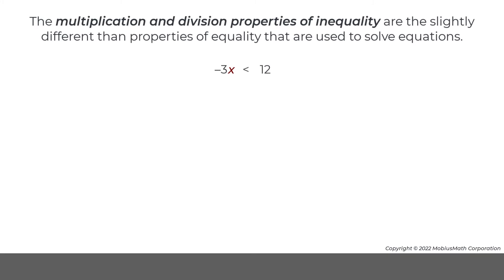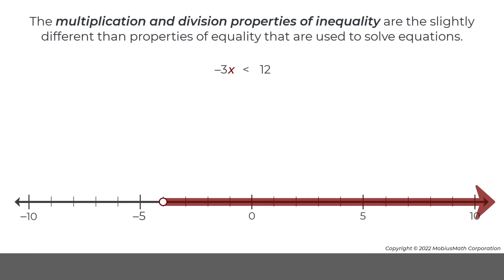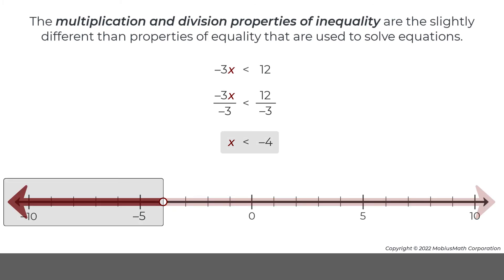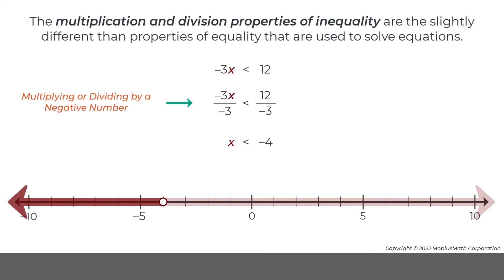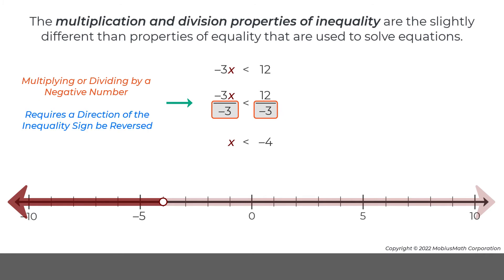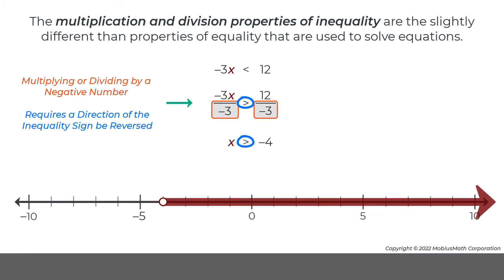The multiplication and division properties of inequality are slightly different than the properties of equality that are used to solve equations. For example, the values that make this inequality true are graphed on the number line below. If both sides of this inequality are divided by negative 3, the rewritten inequality has a different set of values that make it true. This is because multiplying or dividing both sides of an inequality by a negative number requires that the direction of the inequality sign be reversed.